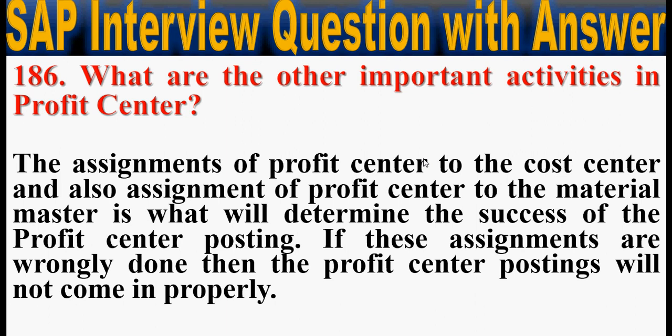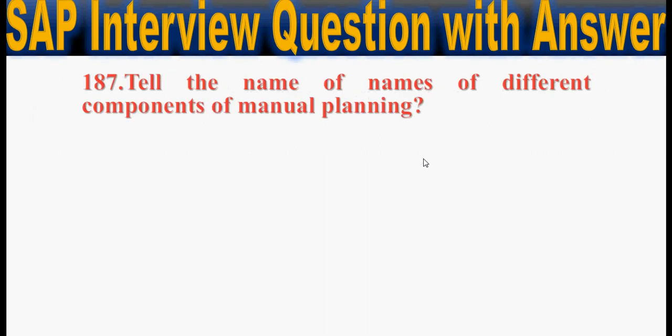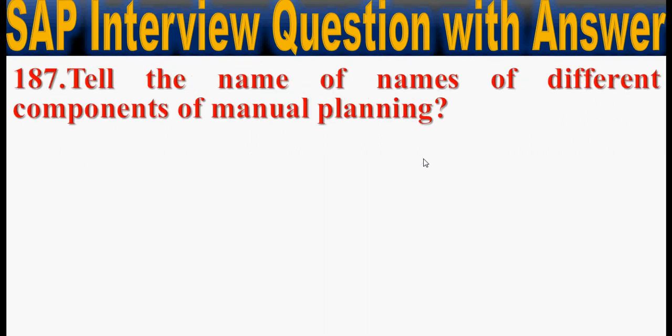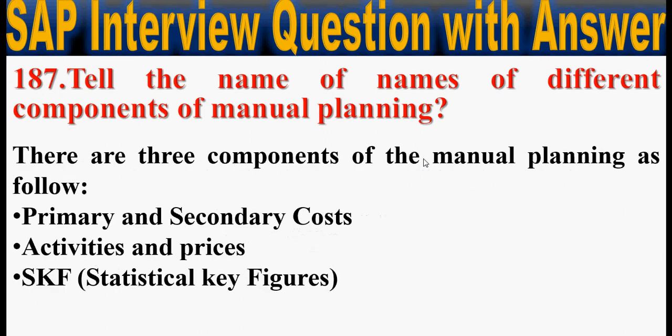Next, tell the name of the different components of manual planning. There are three components of manual planning: primary and secondary costs, activity and prices, and SKF.